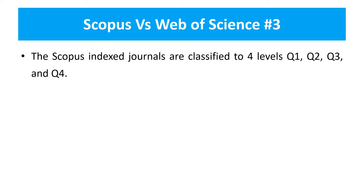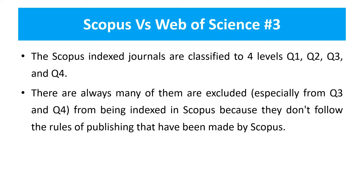Scopus indexed journals are classified into four levels: Q1, Q2, Q3, and Q4. Many journals — especially from Q3 and Q4 — are excluded from being indexed in Scopus because they don't follow Scopus publishing rules. So overall, Scopus indexed journal papers are distributed in four categories. If a paper is classified in Q3 or Q4, it may not be indexed. In this way, Scopus is considered less reliable compared to Web of Science.